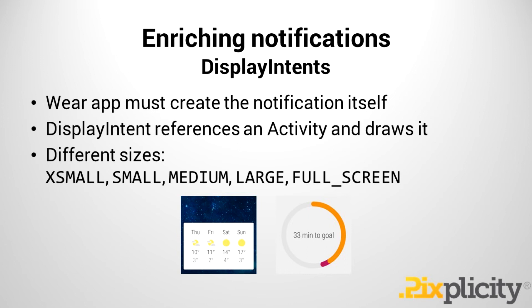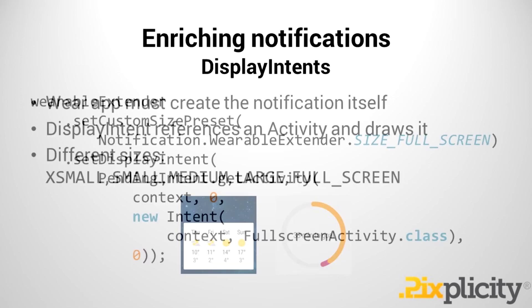You can instruct Android Wear how large this card should display — several sizes from extra-large to full screen, as in the case of Google Fit. We do this using the WearableExtender: we set the custom size preset and then use the display intent. All this display intent really is, is a PendingIntent to a particular activity, and that activity is then drawn inside the card.